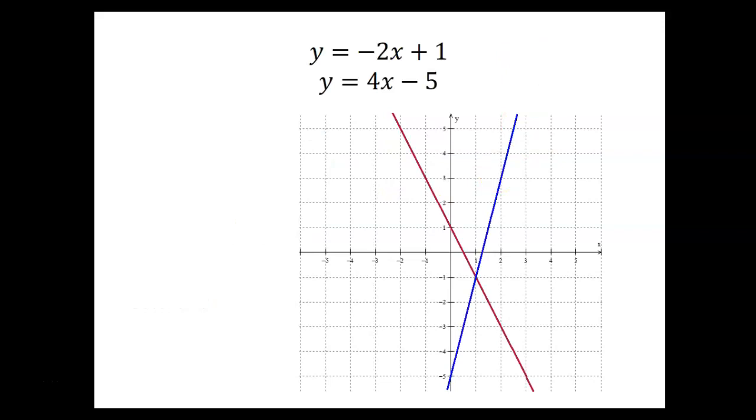Well, let's look at the graph. The sort of reddish line is the one with a slope of negative 2 and a y-intercept at 1. The blue line is the one with a slope of 4 and a y-intercept down at negative 5. And can you see the point where these two lines intersect? Yeah, what are the coordinates of that point? 1, negative 1. This is the point where x is positive 1 and y is negative 1.